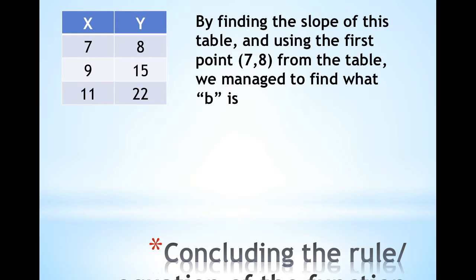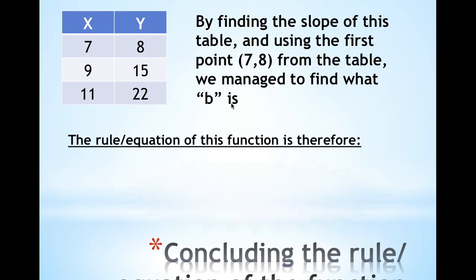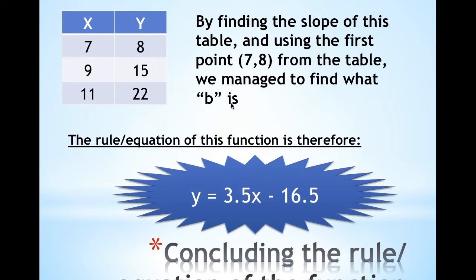Using the first point (7, 8) of this table of values, we managed to find what B was algebraically. So the final rule for this function is y = 3.5x − 16.5, because that's what we found our B to be.